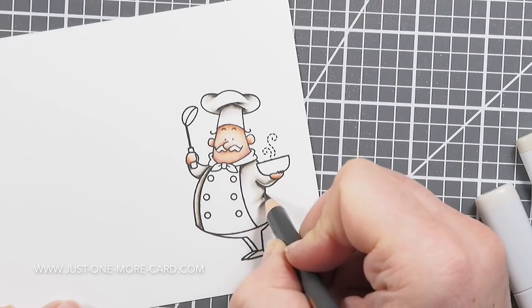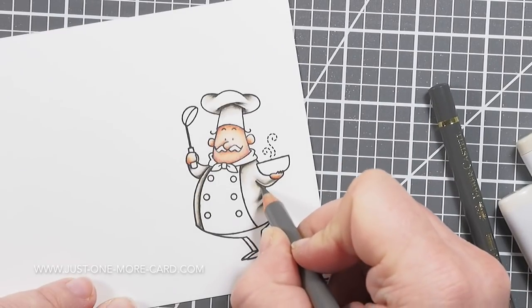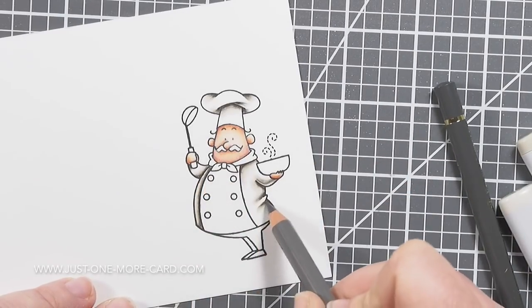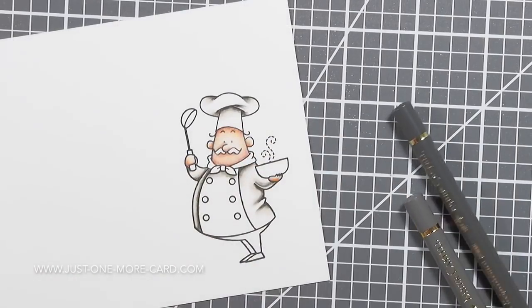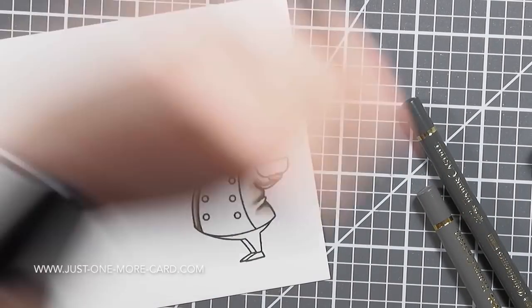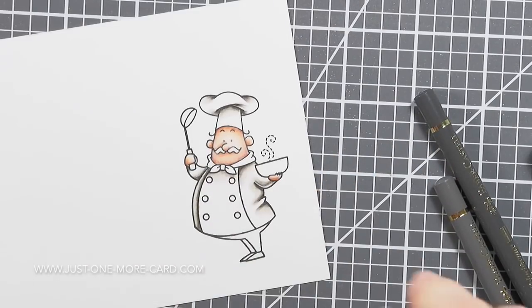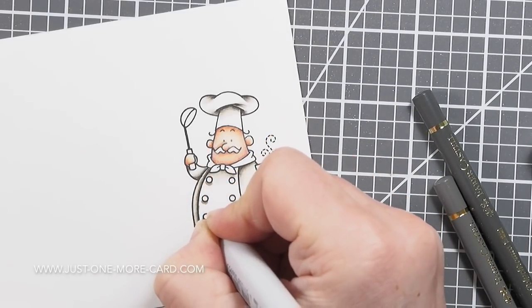I mean, I could have even left it at that, but I like to make sure that my shadows are really nice and dark. For that, I really like to use the pencils and combine them with the Copics. Of course, once I've put down the pencils, I'm not going over them with the Copics anymore.